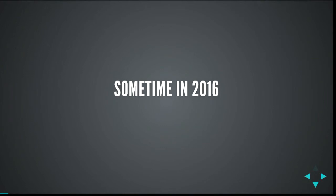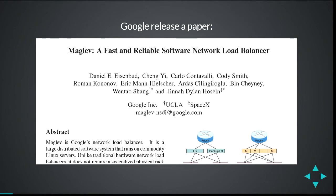This story starts back in about 2008 when Google started building an internal load balancer that they call Maglev. In 2016, they released a white paper on it, which got some attention and got some people thinking about it. One of the obvious big questions is: why? We've got LVS, we've got Squid, Varnish, HAProxy. Do we actually need a new thing?